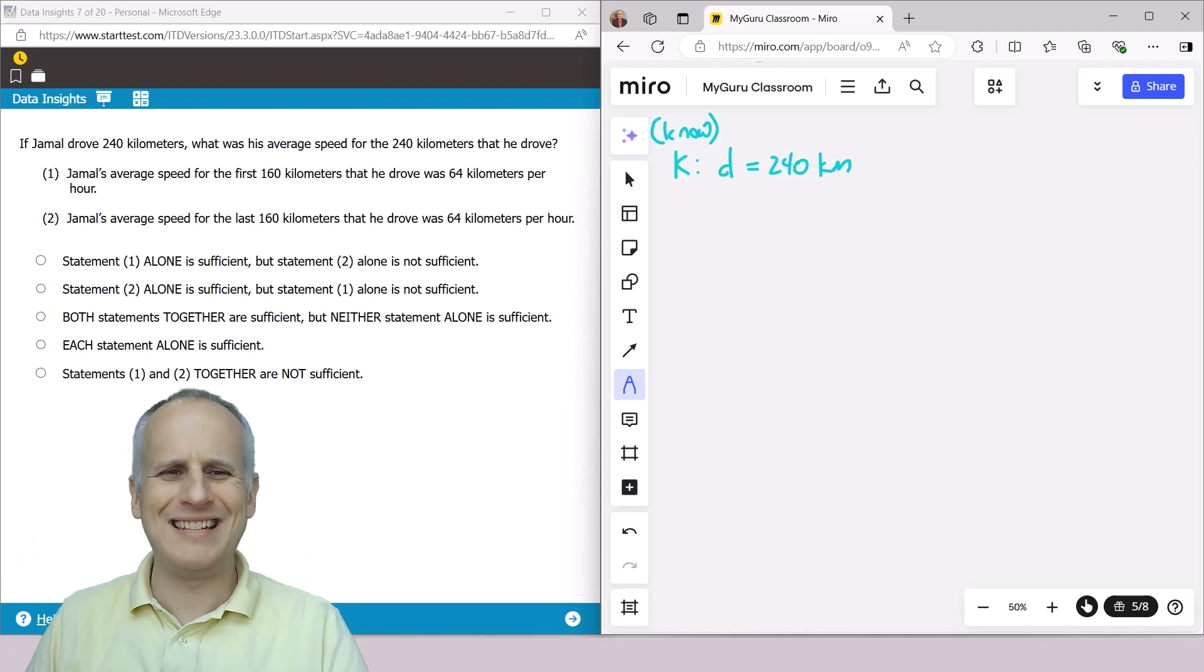Then we're asked what was his average speed for the 240 kilometers that he drove. So we're just going to write S for speed equals question mark and box that off as what we're being asked to determine with the information from the conditions.